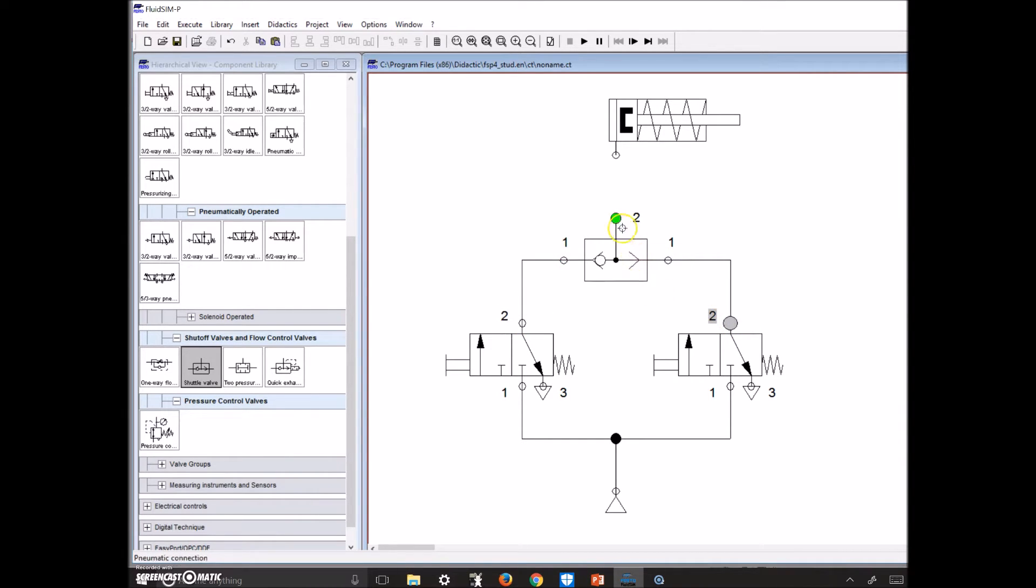Drop that guy in and then we'll just connect up our tubing. One input, the other input and then our single output. Now we've changed it from an AND circuit to an OR circuit.